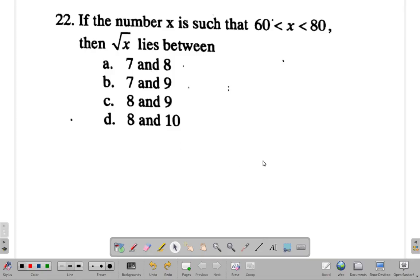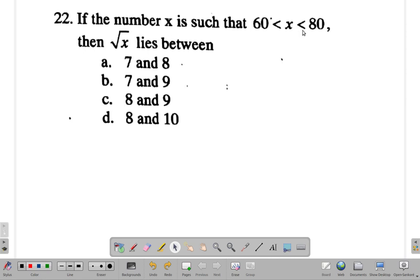Question 22. Do this one in a minute and then come back. Alright, let's see. If the number x is such that x is between 60 and 80, then the square root of x lies between.